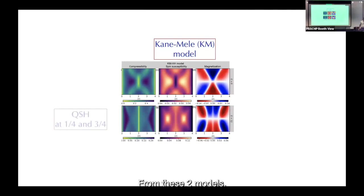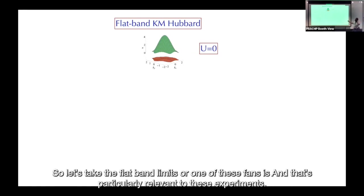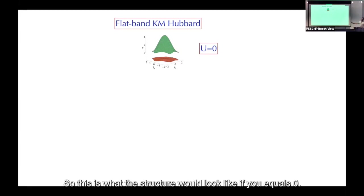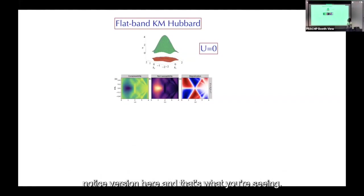The nice thing about the Kane-Mele model is that the bandwidth of each band can be separated, unlike the BHZ model. Let's take the flat band limit where one band is flat — particularly relevant to these experiments. At U=0, the quantum Hall states appear when the filling is large enough to occupy the dispersive band; the flat band has no dispersion.